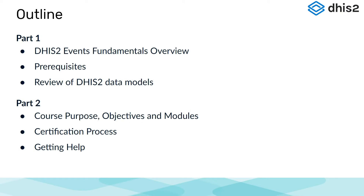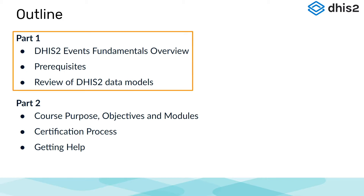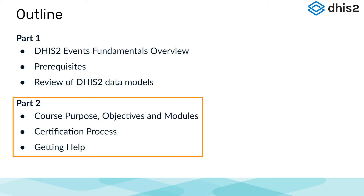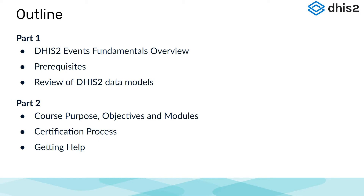I would like to take this opportunity now to walk you through the course in more detail. In this initial overview, we are going to walk through the course in two separate discussions. In part one, we will provide a general overview of the course, its prerequisites, and a quick review of some DHIS2 data models. In part two, we will discuss the course purpose, objectives, and modules in more detail. We will also discuss the certification process and how to get help.